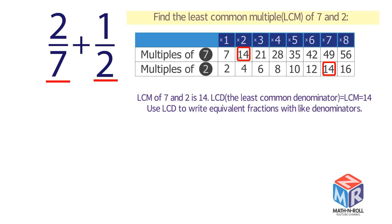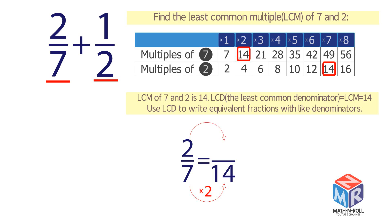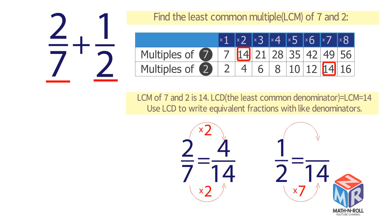The least common denominator equals the least common multiple, which equals 14. Use the least common denominator to write equivalent fractions with like denominators. Remember, in order to find the equivalent fraction, you need to multiply both parts — the numerator and the denominator — by the same number. The equivalent fraction of 2 sevenths is 4 over 14.